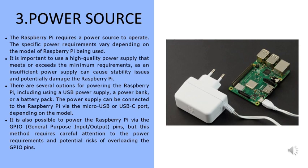The third part is the power source. The Raspberry Pi requires a power source to operate, and the specific power requirements vary depending on the model. It is important to use a high-quality power supply that meets or exceeds the minimum requirements, as an insufficient power supply can cause stability issues and potentially damage the Raspberry Pi. Options for powering it include using a USB power supply, a power bank, or a battery pack.